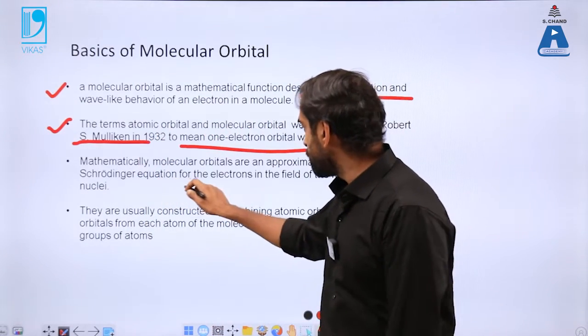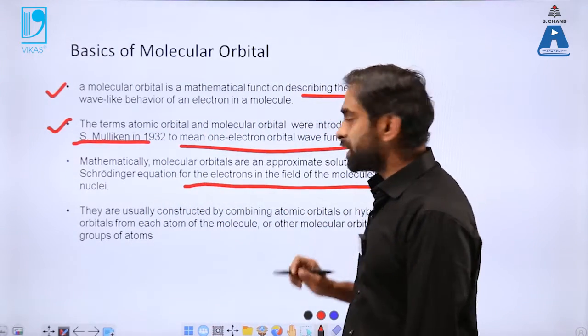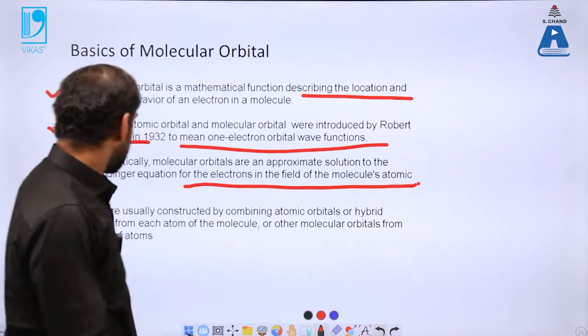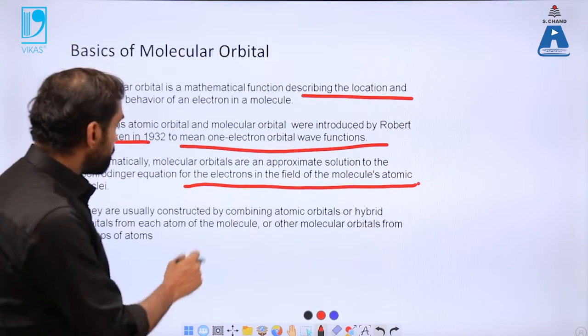Molecular orbitals approximate the Schrodinger equation, the same equation we talked about in previous two videos, for explaining the electronic field in molecules.